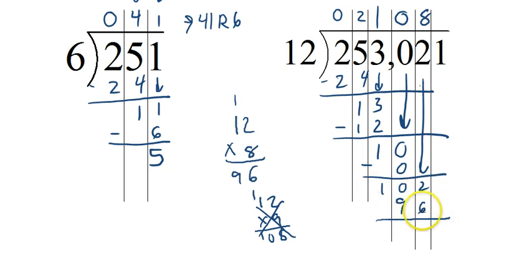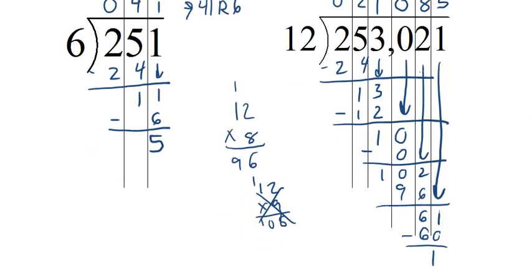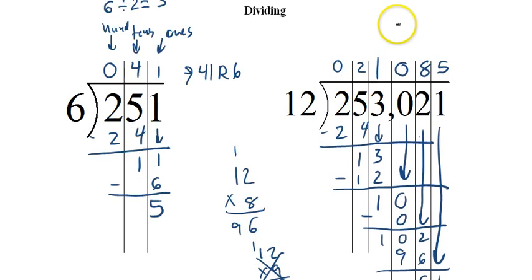And then 102 and 96. Up 4 would give us 100. Then another 2, so it's 6. 12 into 61. Well, we know 12 times 5 is 60. And we get 1. And that's what we want. We want a remainder that is smaller than 12, which we're good. So our answer is 21,085 remainder 1.